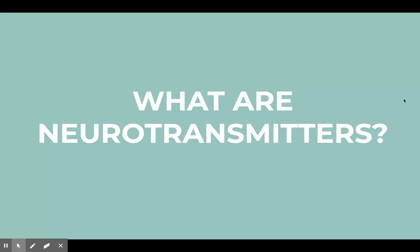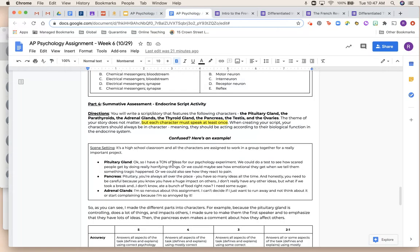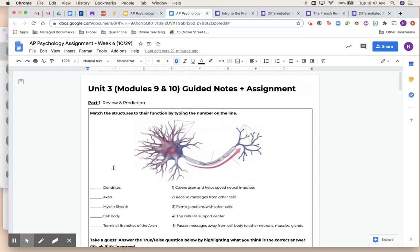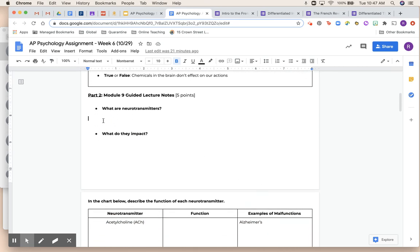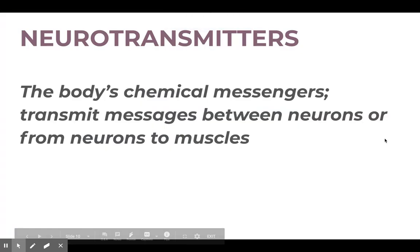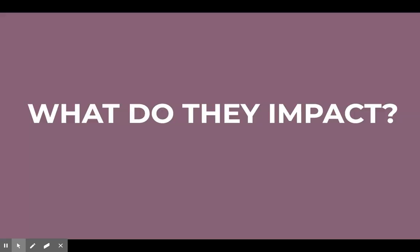What are neurotransmitters? Before I go into this, I want to show you on the guided note sheet where this is. Make sure you do this part first — answer the questions and then you'll get to hear what neurotransmitters are and what they impact. Neurotransmitters are the body's chemical messengers. They are literally chemicals moving around in our body, sending messages between neurons or from a neuron to our muscles, impacting either the way we think or the way we act.